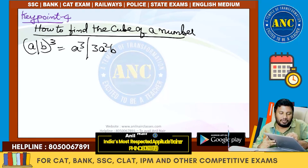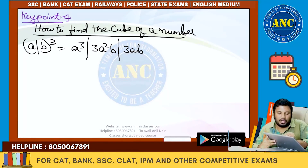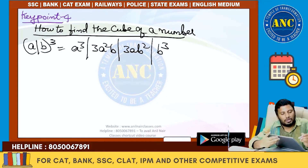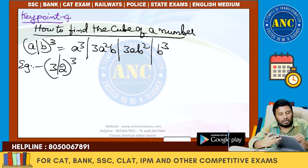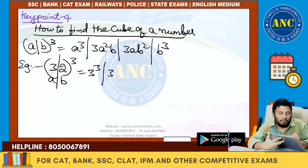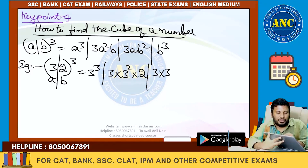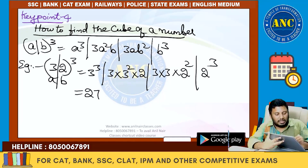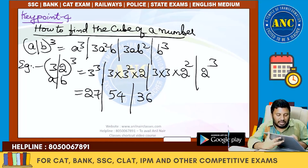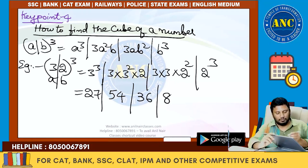(a+b)³ = a³ + 3a²b + 3ab² + b³. For 32 cubed: a = 3, b = 2. So we get: a³ = 27; 3a²b = 3×9×2 = 54; 3ab² = 3×3×4 = 36; b³ = 2³ = 8.